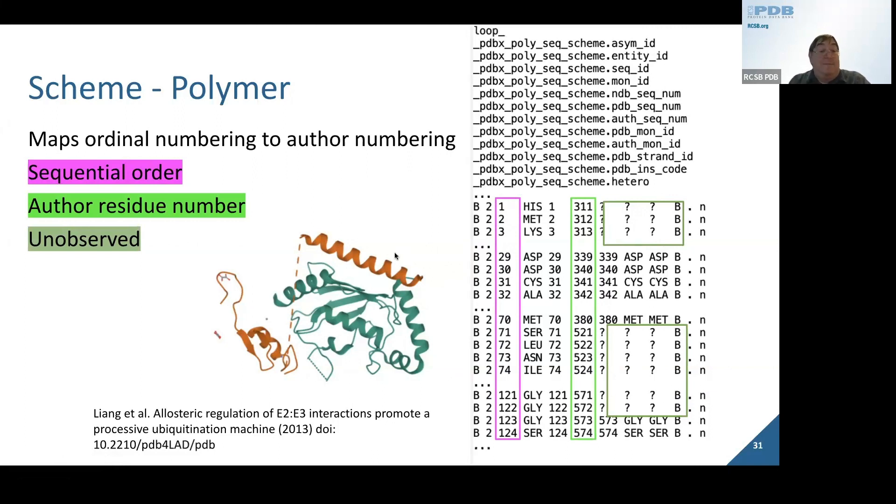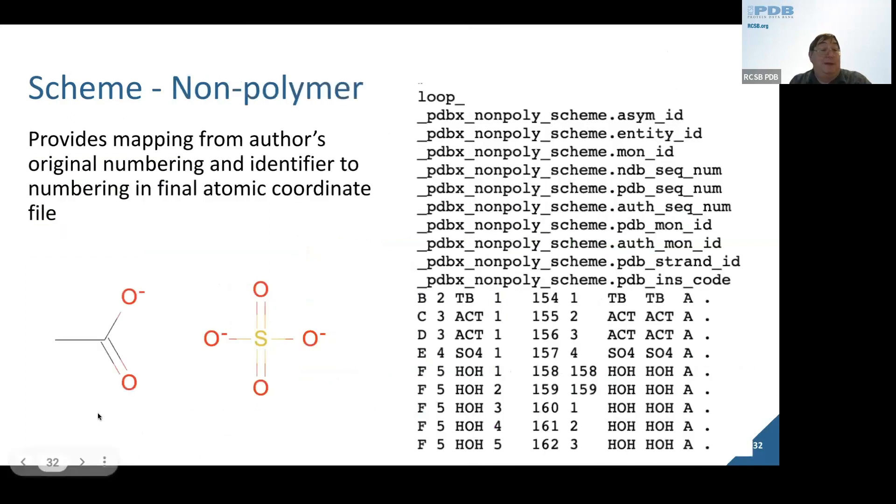This also depicts what is the proper alignment and registration for missing residues. In this particular example, we are showing a large gap in the sequences for the structure. You can see that in 4LAD, there's a large gap in the structure represented by this dashed line. The scheme shows there's a large region from 521 to 572 missing, but we account for all the residues in the experiment.